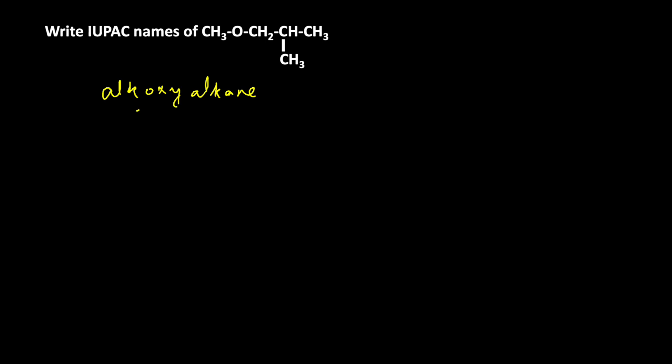If you consider this structure, CH3O has only one carbon atom, meaning it is the lesser alkyl group. The part CH2-CH-CH3 contains more carbon atoms. So we are considering this part as the parent alkane group.